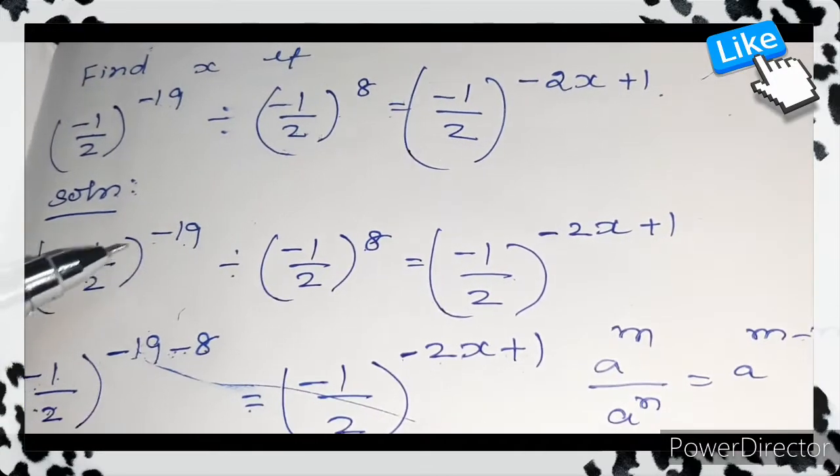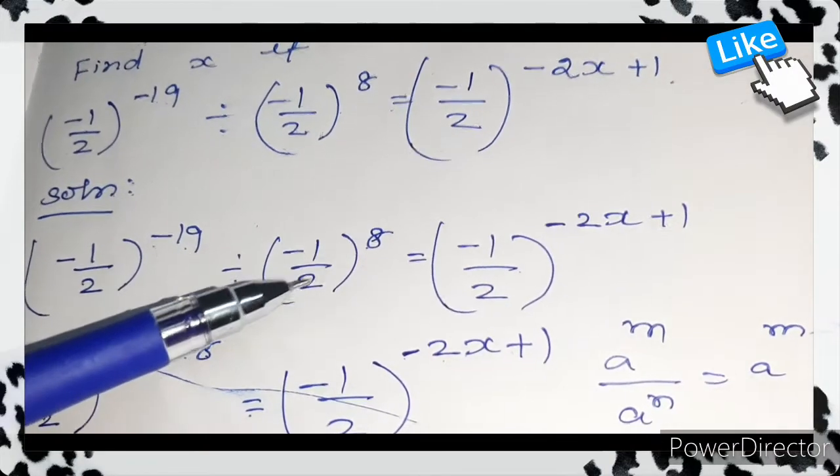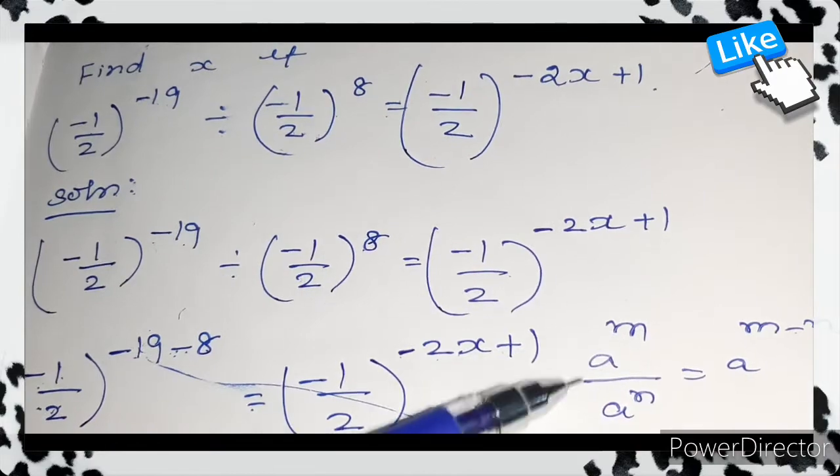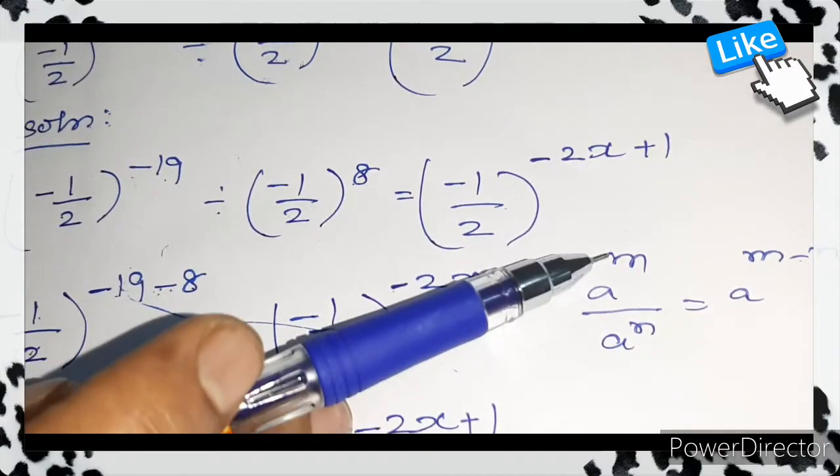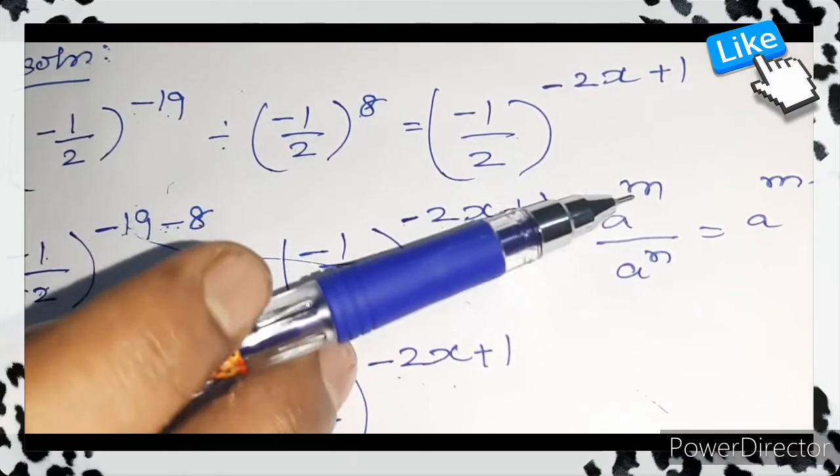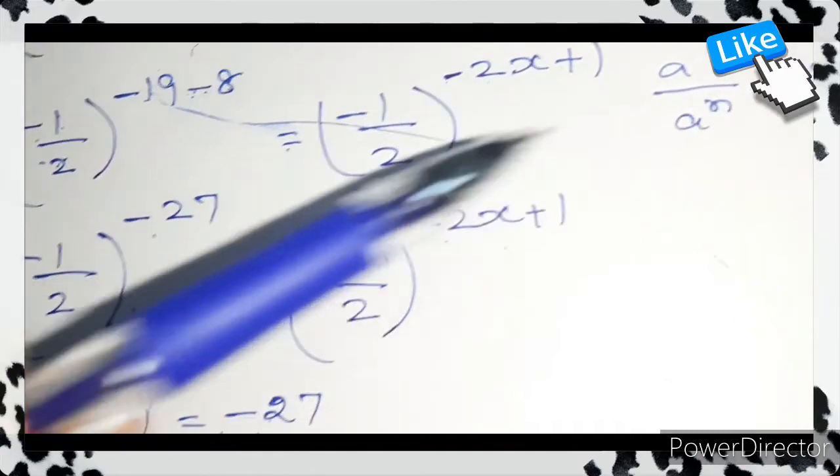(-1/2)^-19 divided by (-1/2)^8 is of the form a^m divided by a^n. If the base is same and the power is only different, therefore a^m / a^n = a^(m-n). We are going to use this formula here.